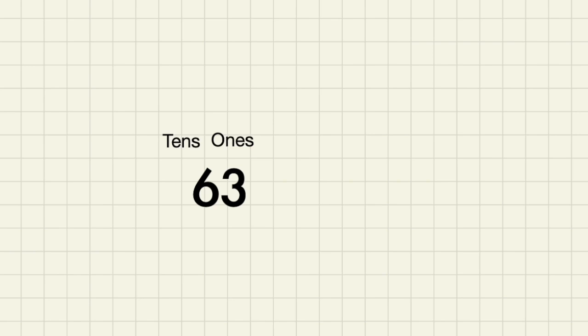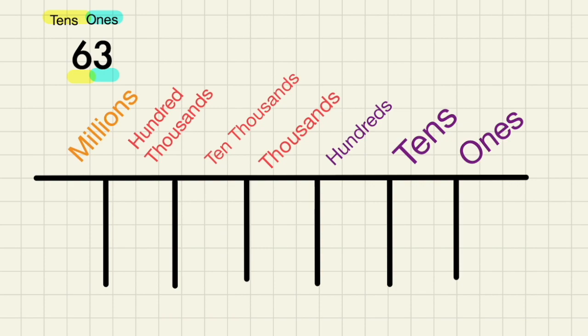Here we have the number 63 and the number 3 is in the ones place, the number 6 is in the tens place. Let's try to put this in the place values chart.